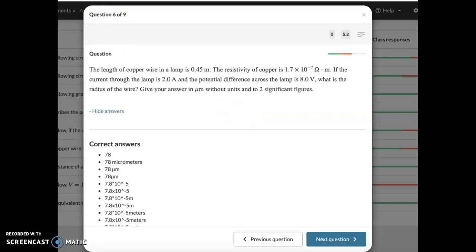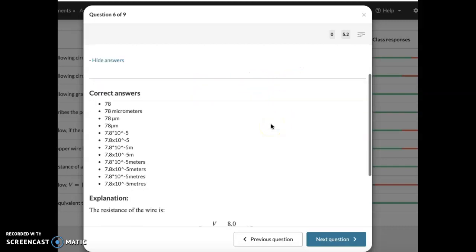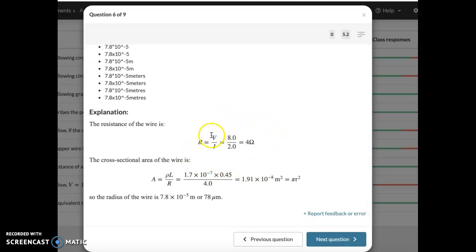Here, we have a resistivity question. The resistivity of copper is 1.7 times 10 to the minus 7. The current through the amp is 2 amps. So they're not giving you resistance. They're giving you current. The potential difference is 8. What is the radius of the wire? Give your answer in micrometers without units and to two significant figures. Now, this is a simple question using the resistivity formula. But they don't give you resistance. So you find the resistance first using the voltage and the current given. And there you have a resistance of 4.